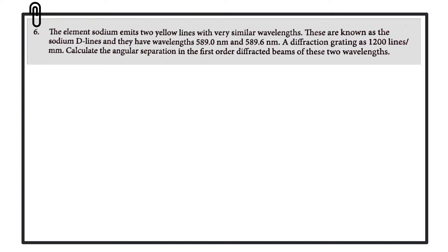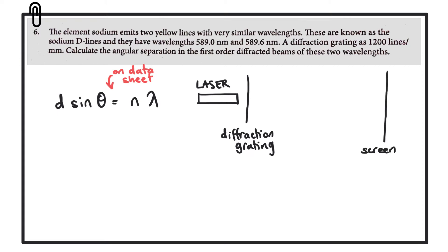We'll start first with the equation which is given to you on your data sheet. When the laser light passes through the diffraction grating, which is just a series of narrow slits rather than Young's double slit where we have two, here we have many slits. It passes through the diffraction grating and then we get a pattern on the screen where we have a series of bright spots.